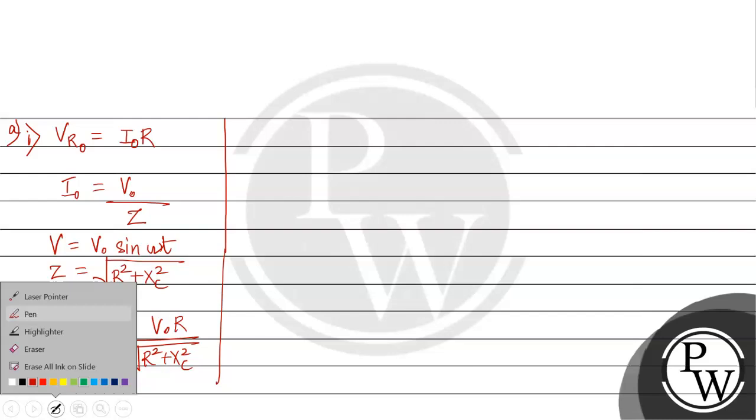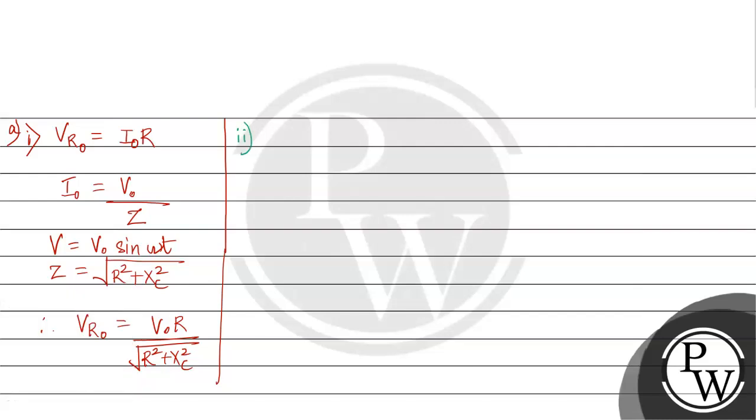Now, next is part 2. Peak value of the voltage across the capacitor. So, VC₀ equals I₀ into Xc. This is the value. I₀ we already found. V₀ by Z. Z is square root of R² plus Xc² into Xc.